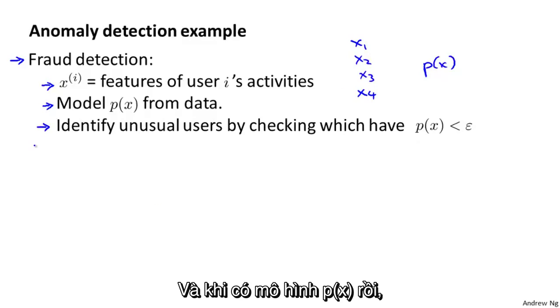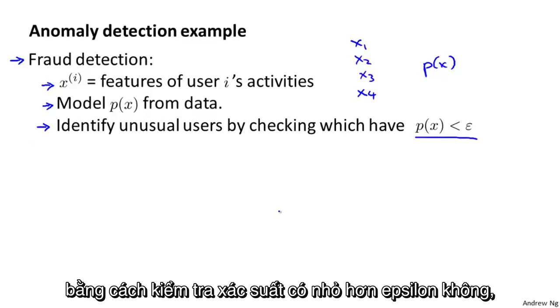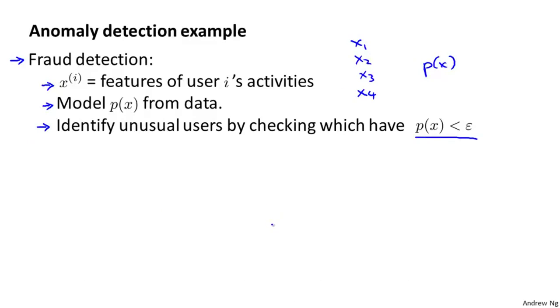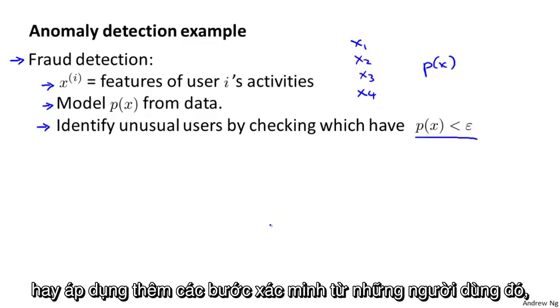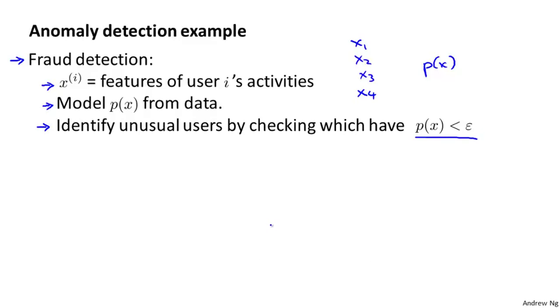And finally, having modeled P of X, you can try to identify users that are behaving very strangely on your website by checking which ones have probability of X less than Epsilon. And maybe send the profiles of those users for further review or demand additional identification from those users or some such to guard against strange behavior or fraudulent behavior on your website.